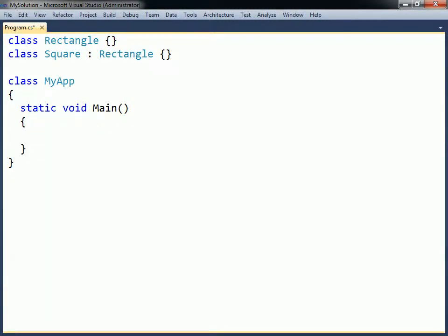Conceptually, a derived class is a specialization of the base class. This means that Square is a kind of Rectangle as well as an object, and can therefore be used anywhere a Rectangle or Object is expected.